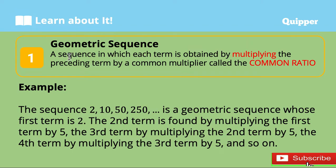A geometric sequence is a sequence in which each term is obtained by multiplying the preceding term by a common multiplier called the common ratio. For example, the sequence 2, 10, 50, 250, and so on is a geometric sequence whose first term is 2, and the second term is found by multiplying the first term by 5. 2 times 5 is 10, and the third term is obtained by multiplying the second term by 5. 10 times 5 is 50, and 50 times 5 is 250, and so on. This common multiplier, which is 5, is what we call the common ratio.